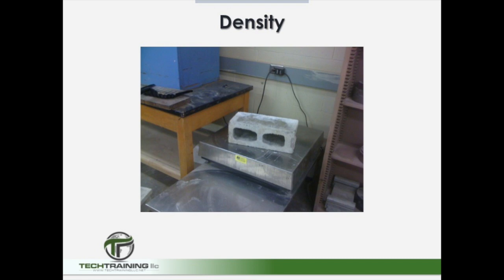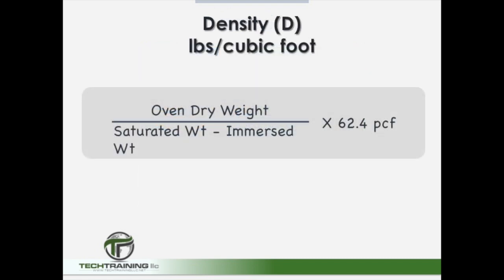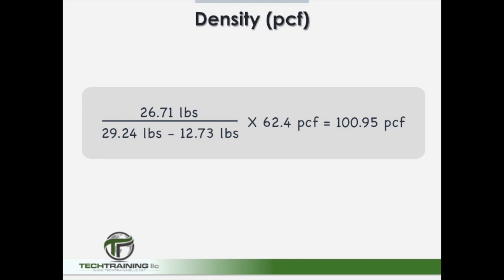The next calculation is density. Since density is reported in pounds per cubic foot, we take the oven dry weight and divide it by the saturated weight minus the immersed weight, times 62.4 pounds per cubic foot. Plugging in our data: 26.71 pounds divided by 29.24 pounds minus 12.73 pounds, times 62.4 pounds per cubic foot, for a density of 100.95 pounds per cubic foot.